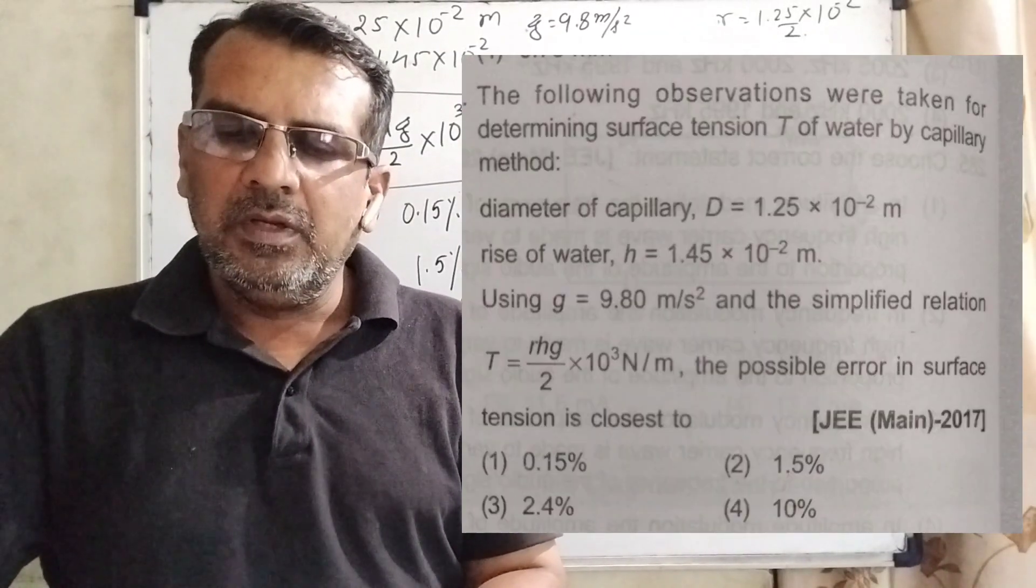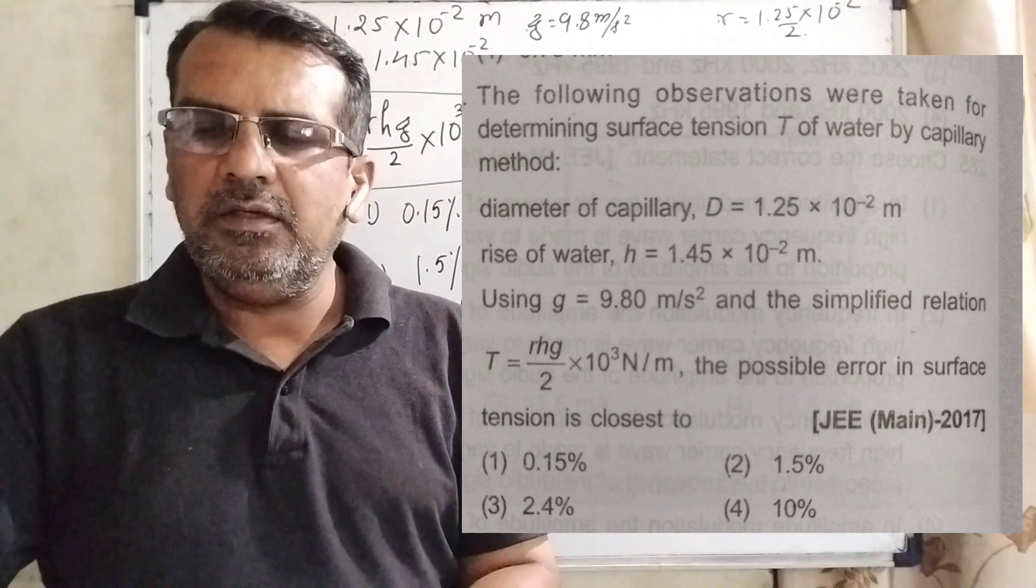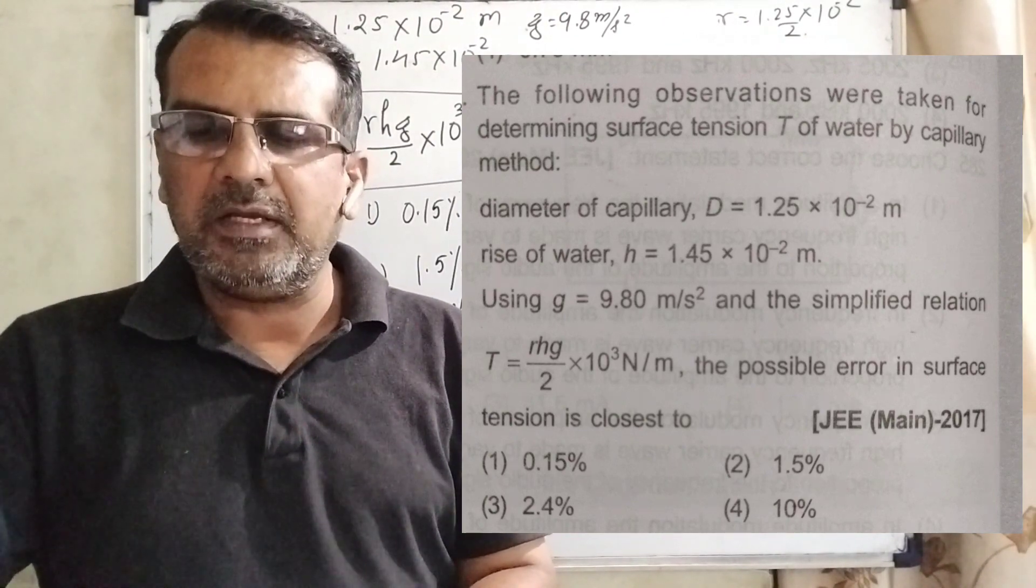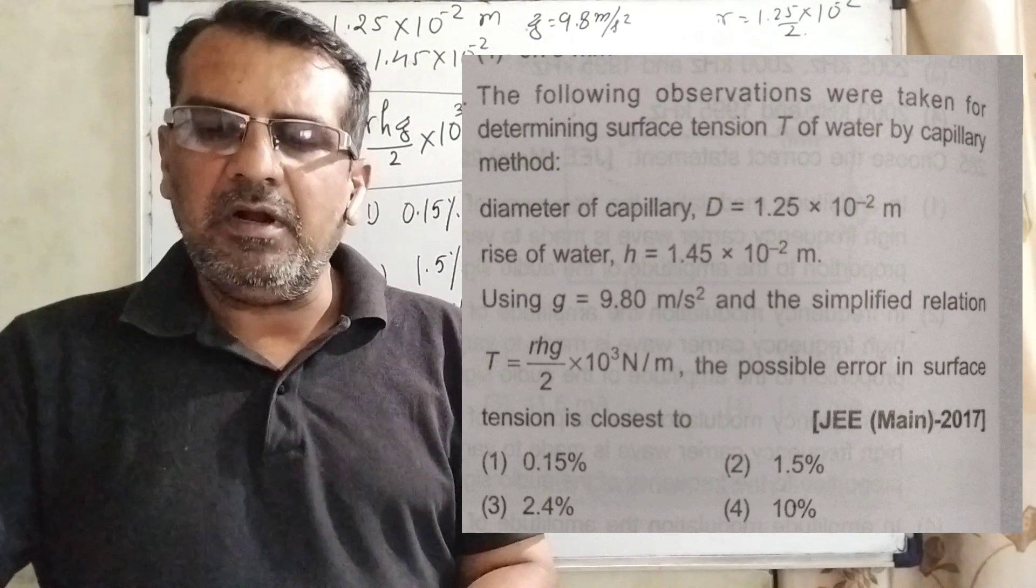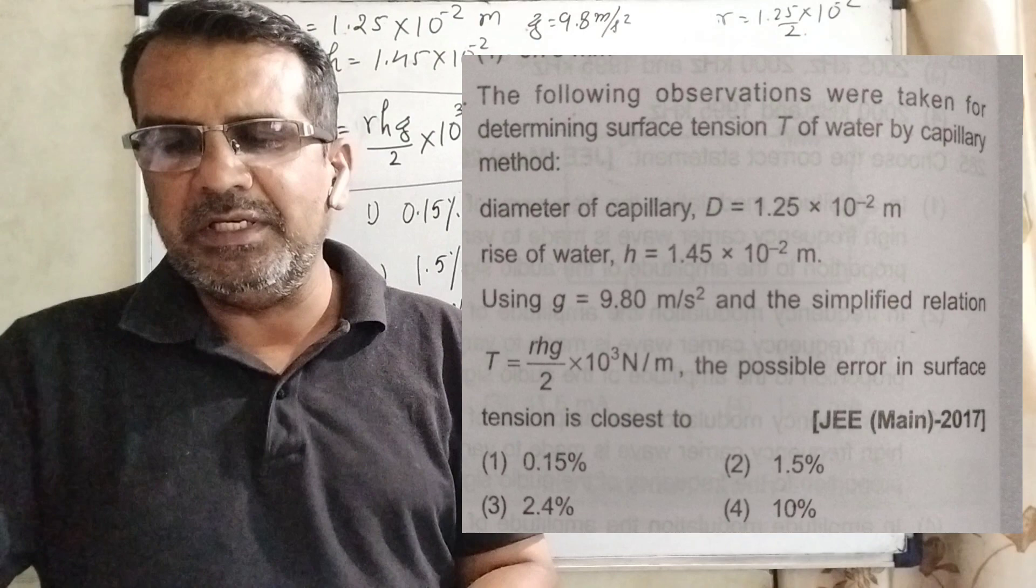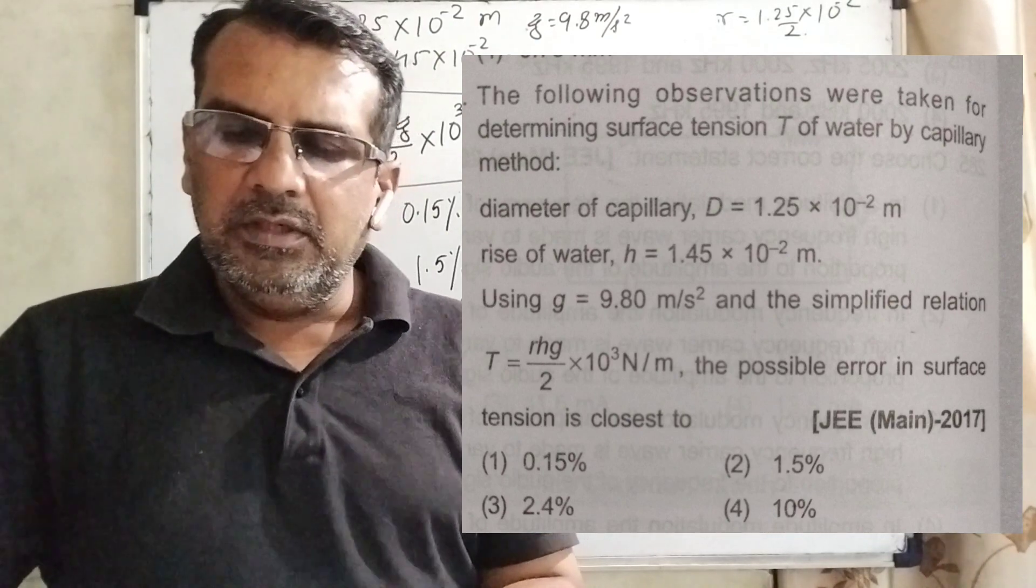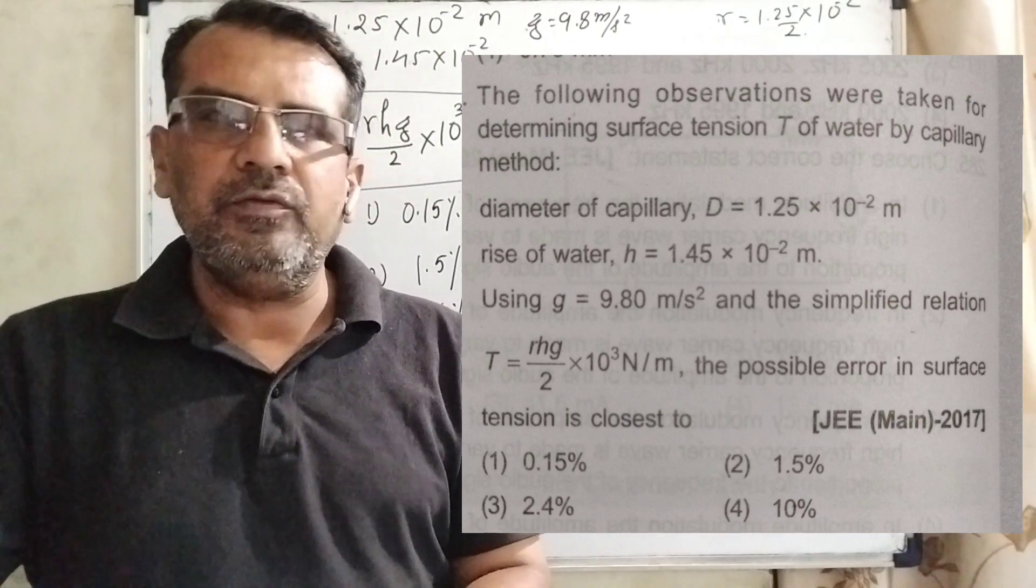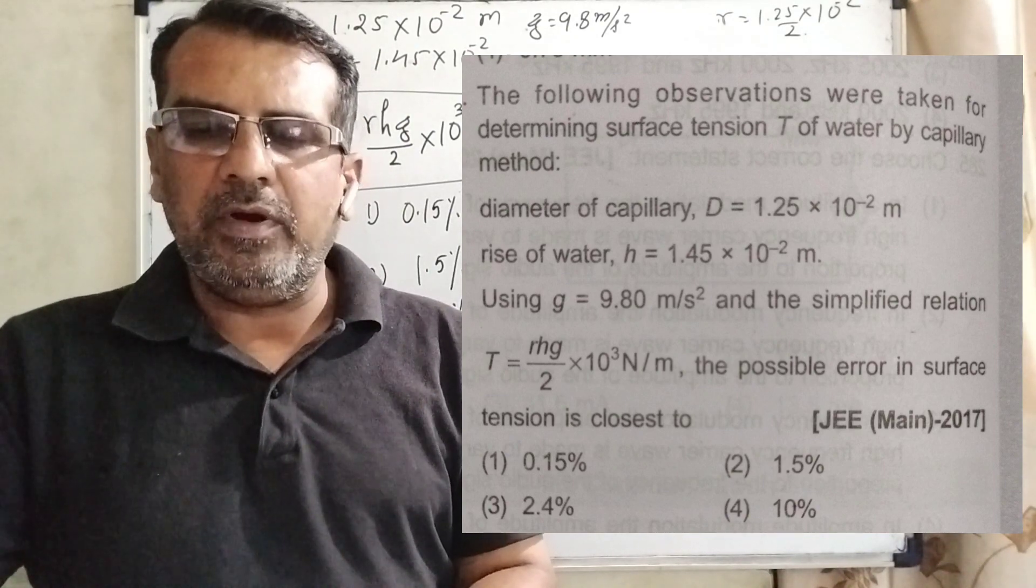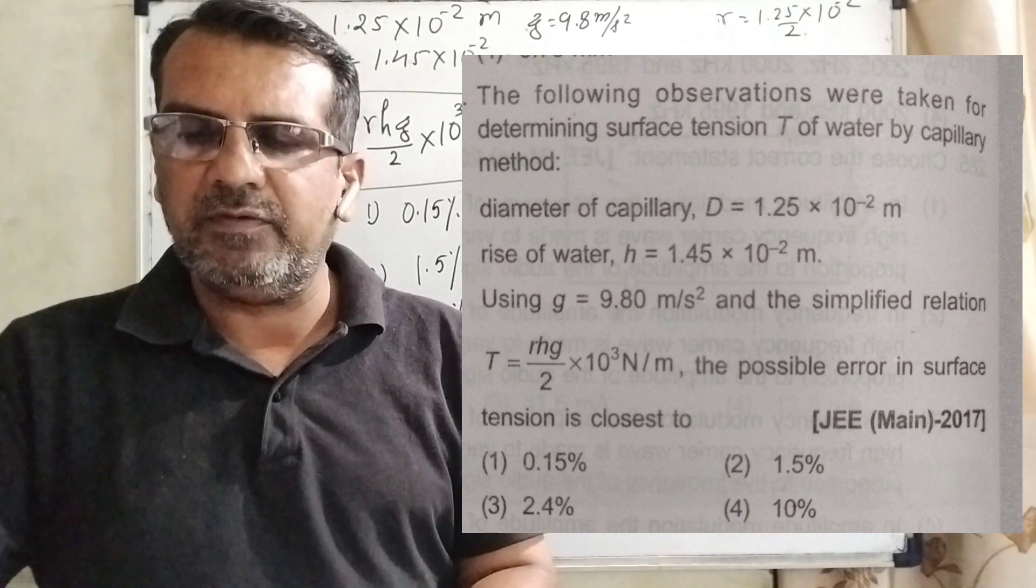Now here is the question. The following observations were taken for determining surface tension T of water by capillary method. Diameter of capillary D equal to 1.25 into 10 raised to power minus 2 meter and rise of water H equal to 1.45 into 10 raised to power minus 2 meter. Using g equal to 9.80 meter per second square.